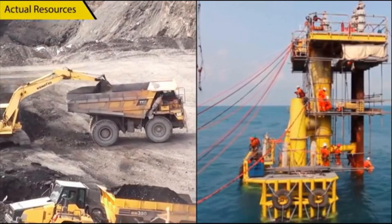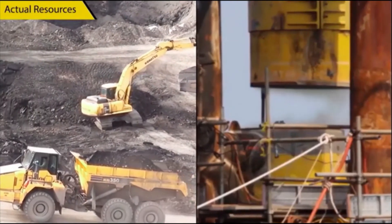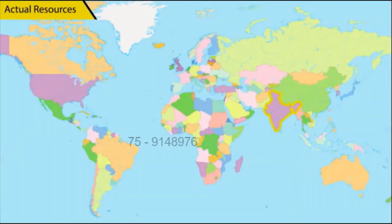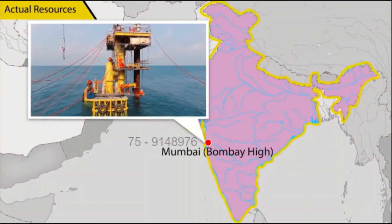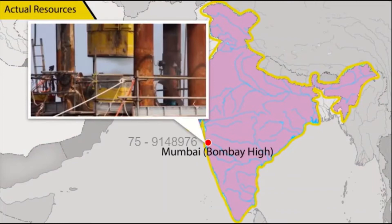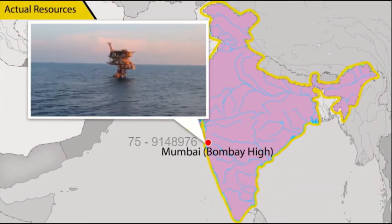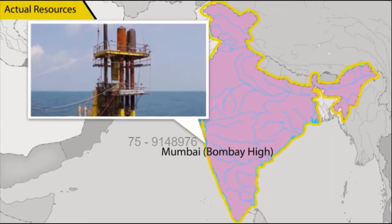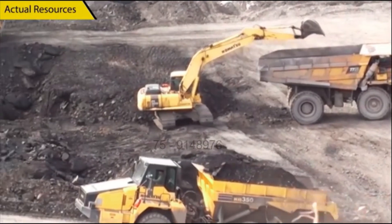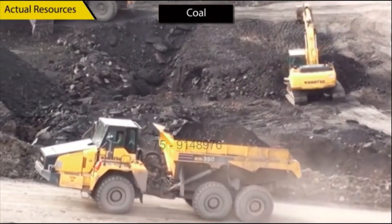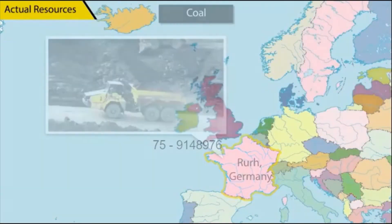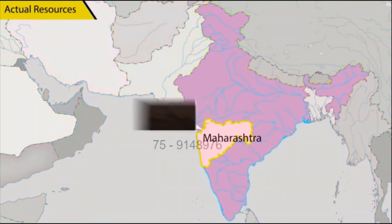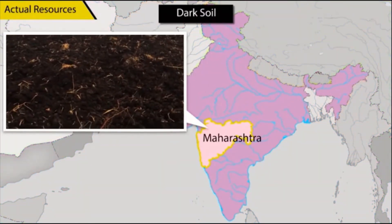Resources whose quantity and quality are known and are being used in present time are grouped as actual resources. For example, the Bombay High fields, which is India's largest offshore oil and gas field, is being actively utilized. Hence, it can be considered as an actual resource. Some more examples of actual resources include the rich deposits of coal in the Ruhr region of Germany, the petroleum in West Asia, and the dark soils of the Deccan Plateau in Maharashtra.